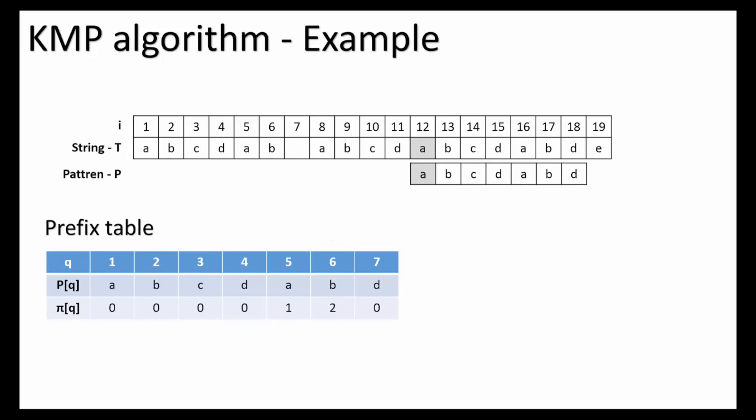We continue to make the comparisons until we find that the final character of the pattern P are matched. Then we can tell that there is the same pattern that exists in the string. If we want to keep searching, we just move the pattern P to the right, 7 minus 0, 7 times.